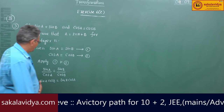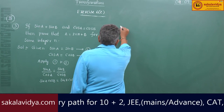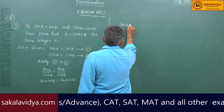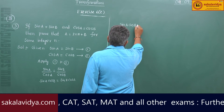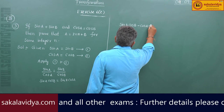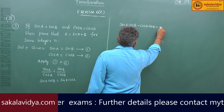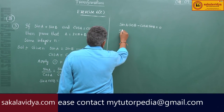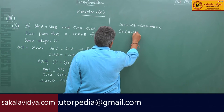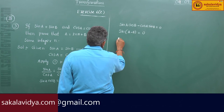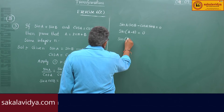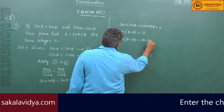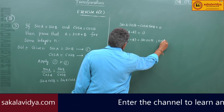Bring to one side: sin a cos b minus cos a sin b equals 0. This is sin(a minus b) equals 0. So this can be written as sin(a minus b) equals sin(2nπ), where n belongs to integers.